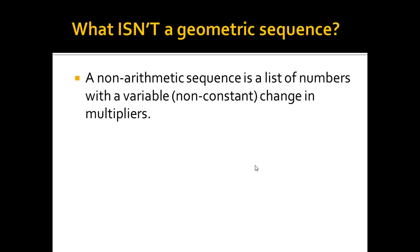Now, if I have a non-constant change in multipliers, a variable change, then I could have something that looks like this. From 2 to -4, it's pretty clear I'm multiplying by -2.